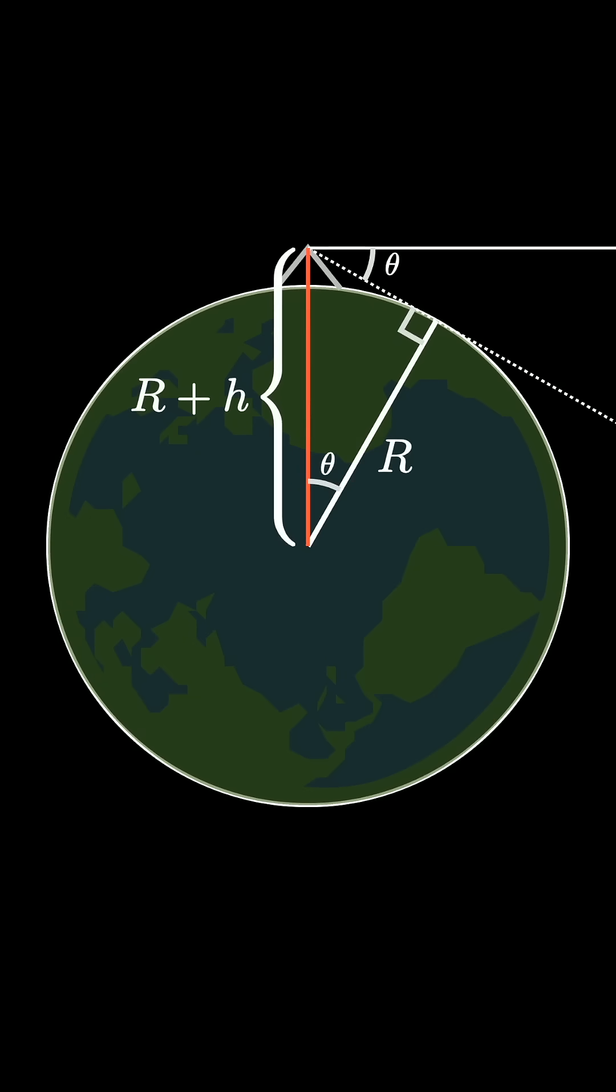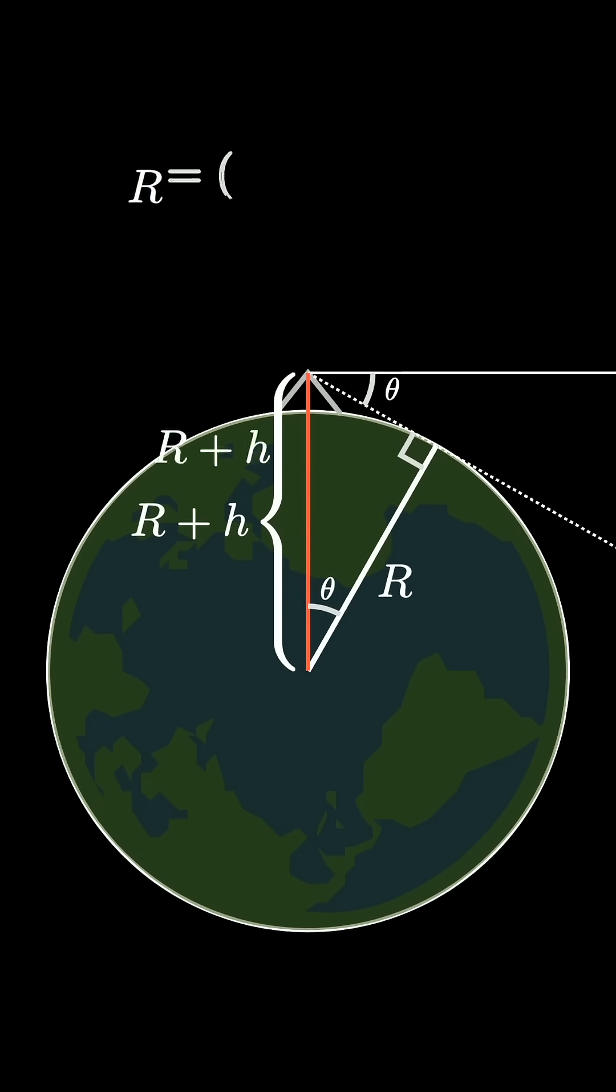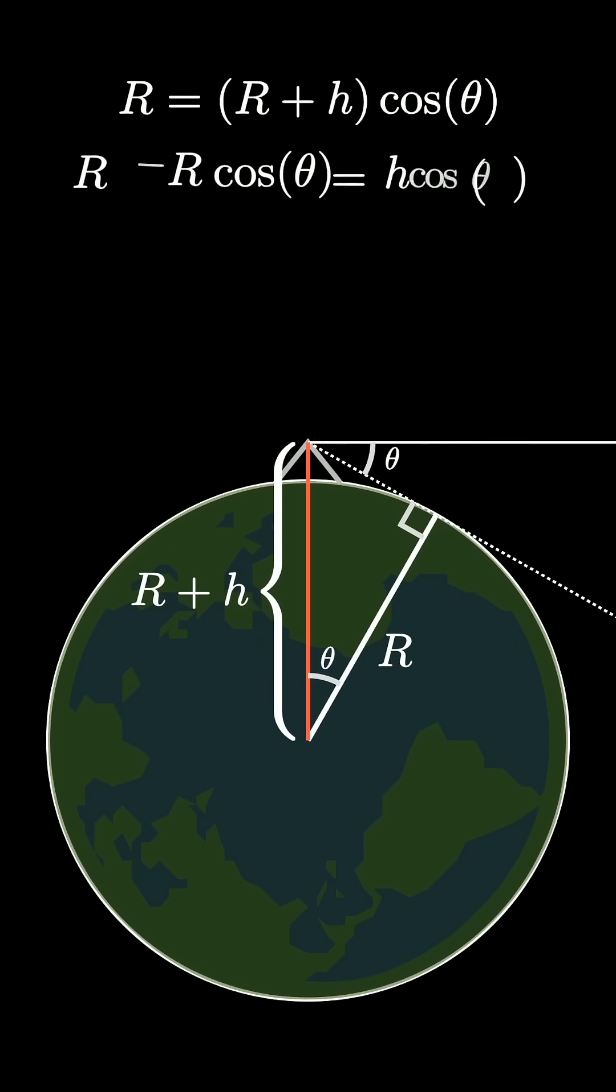So there is an equation: r = (r + h) × cos(θ). Using elementary trigonometry, you can relate the radius of the Earth plus the height of the mountain to this angle.